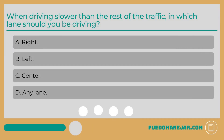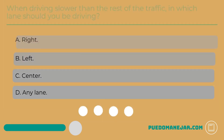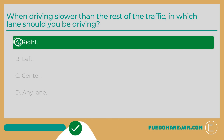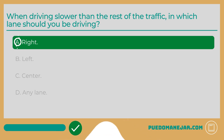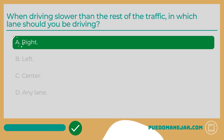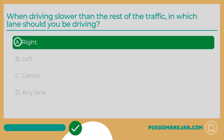When driving slower than the rest of the traffic, in which lane should you be driving? A. Right. B. Left. C. Center. D. Any lane. The answer is A, the right lane. On a multi-lane highway, drivers should choose the appropriate lane based on their speed. If you are driving slower than other traffic, you should be in the rightmost lane. When slow traffic keeps to the right, it helps maintain a safe, normal flow of traffic.